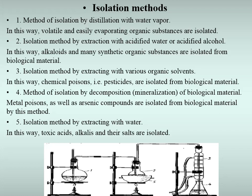The following isolation methods are available: method of isolation by distillation with water vapor, by which volatile and easily evaporating organic substances are isolated; isolation by extraction with acidified water or acidified alcohol, by which alkaloids and many synthetic organic substances are isolated; isolation by extracting with various organic solvents, by which chemical poisons such as pesticides are isolated; methods of isolation by decomposition or mineralization of biological material, by which metal poisons and arsenic compounds are isolated; and isolation by extracting with water, by which toxic acids, alkaloids, and salts are isolated.